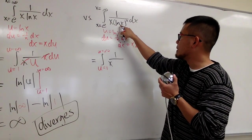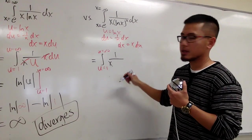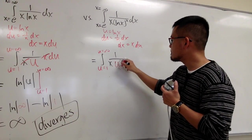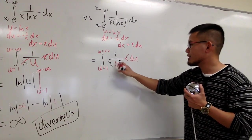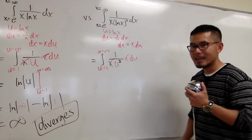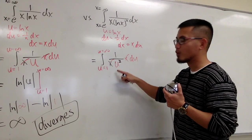We still have 1 over x. And then in this case now, it will be u squared. So we have x times u squared. dx is x times du. And once again, the x and x cancel out. But we have to integrate 1 over u squared.